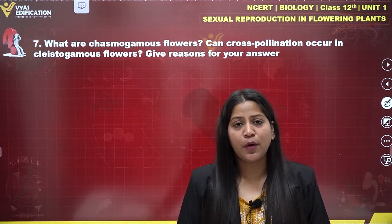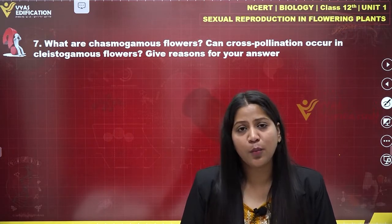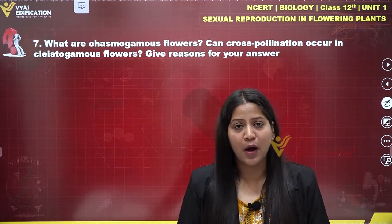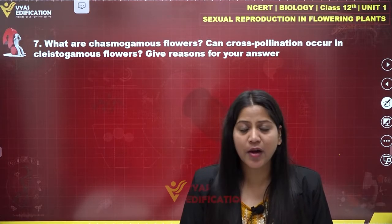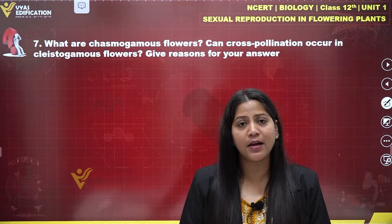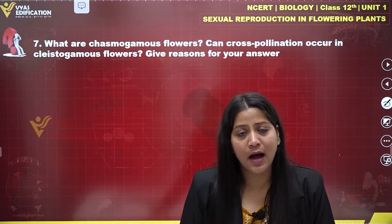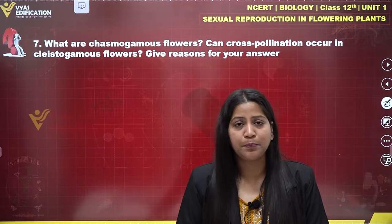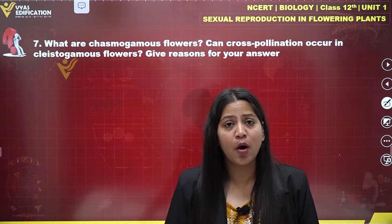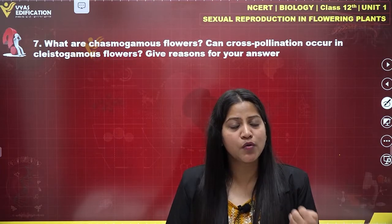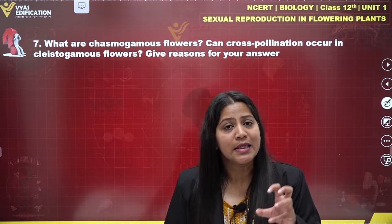If we talk about what chasmogamous flowers are, chasmogamous flowers are the flowers which have exposed anthers as well as exposed stigma into the environment, because they open up at their maturity. So these kinds of flowers, when they become mature, will have exposed anthers and exposed stigmas into the environment.